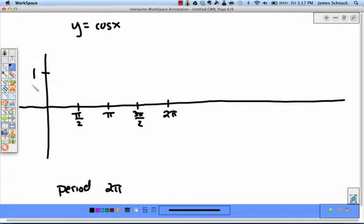The biggest that cosine ever got was 1, and the smallest ever got was negative 1. Now I'm going to think and graph. What's the cosine of 0? The cosine of 0 is 1. The cosine of pi over 2 is 0. The cosine of pi is negative 1. The cosine of 3 pi over 2 is 0. And the cosine of 2 pi is 1.